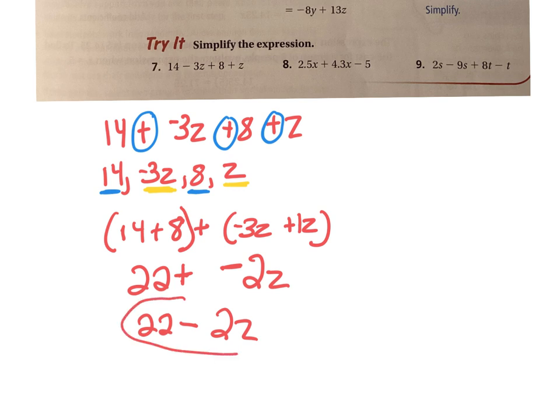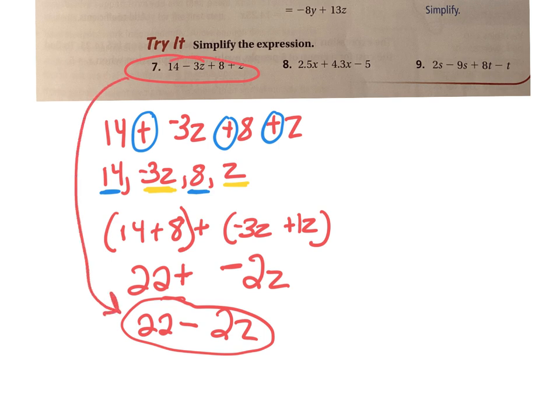This would be the simplest form, going from 14 minus 3z plus 8 plus z down to 22 minus 2z, because those are the like terms that you can put together. Let's do number 8.